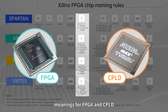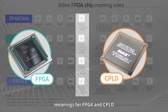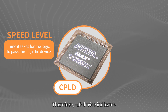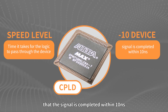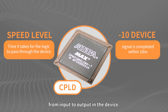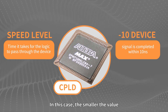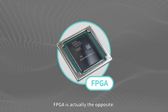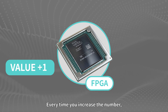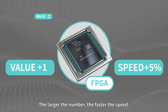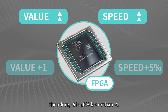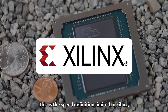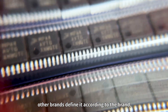For CPLD, the speed grade indicates the time it takes for a signal to pass through the device logic. A '-10' device means the signal completes its path within 10 nanoseconds from input to output. In this case, the smaller the value, the faster the speed. FPGA is actually the opposite — each increase in the number makes the speed about 5% faster. So for FPGA, the larger the number, the faster the speed. Therefore, '-5' is 10% faster than '-4'. This speed definition is specific to Xilinx; other brands define it according to their own standards.